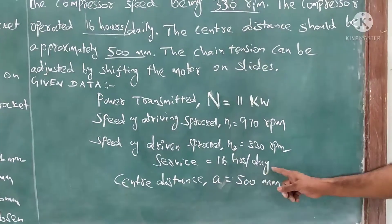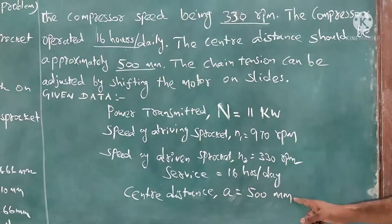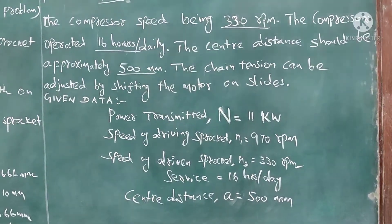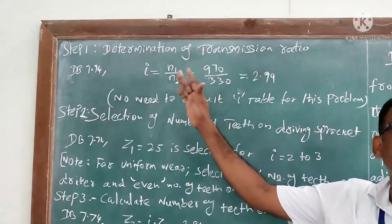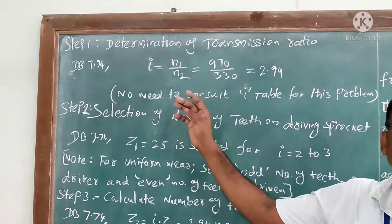Service is given as 16 hours per day. Center distance A = 500 millimeter. Now we come into the steps to solve this problem.